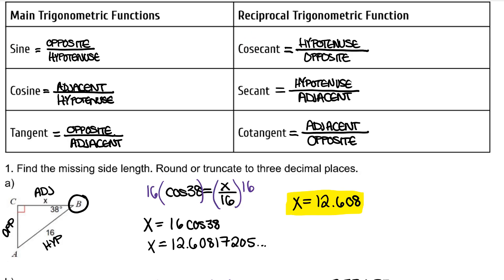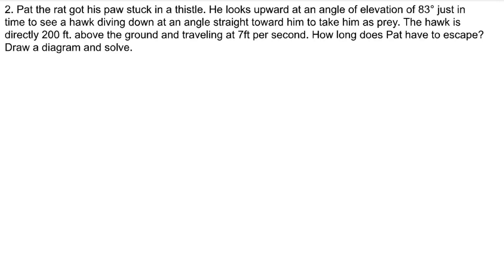Now, we didn't use any of the reciprocal functions to solve for these missing sides because calculators do not have the reciprocal functions. But when we deal with the reciprocal functions, we can rewrite them in terms of sine, cosine, and tangent, and then we can solve from there.